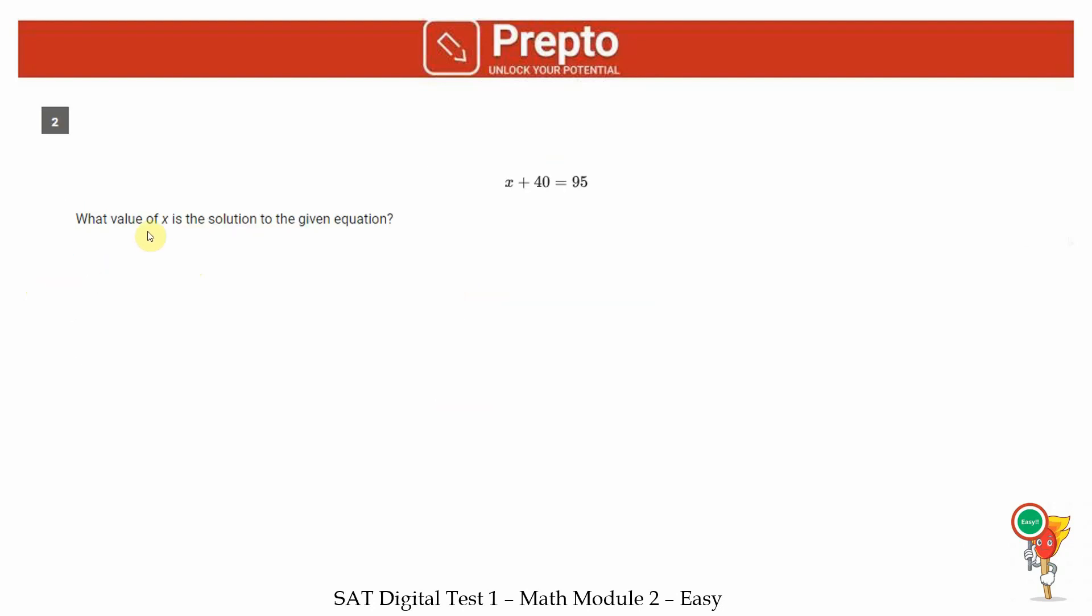Second question, what value of x is the solution to the given equation? So if x plus 40 is 95, x is going to be 95 minus 40, which is 55. As you can see, the questions are fairly reasonable.